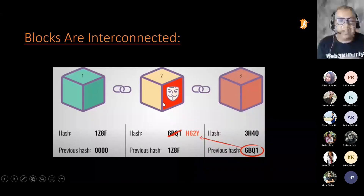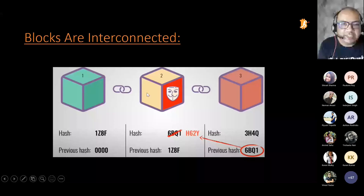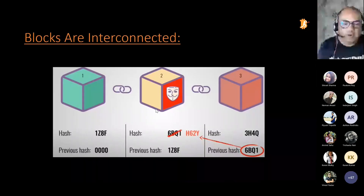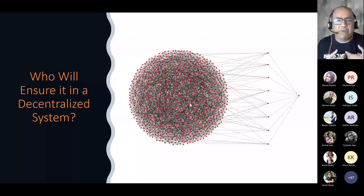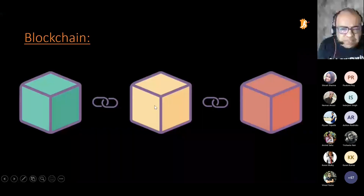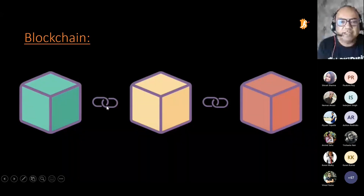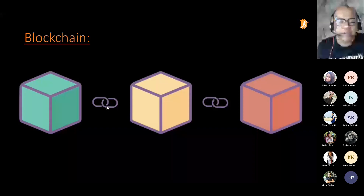Somebody has to put these blocks into the blockchain — they are not added automatically. Somebody has to perform the job of adding blocks to the blockchain. The person who does this is called a miner. Mining is a process where the miner's job is to add these blocks into the blockchain. The incentive for the miner to add these blocks is to get Bitcoin in return.